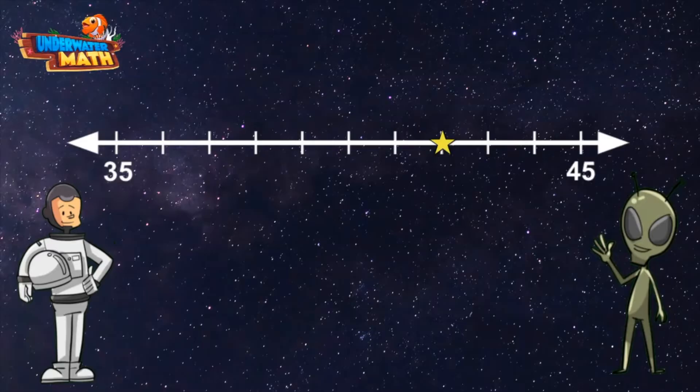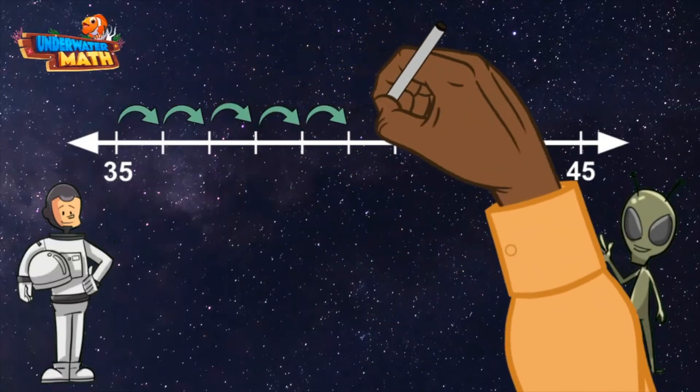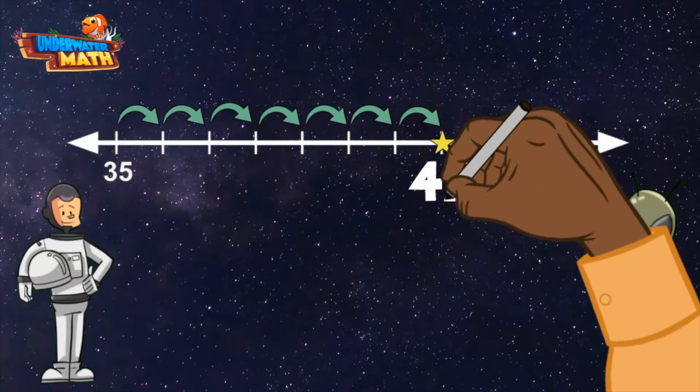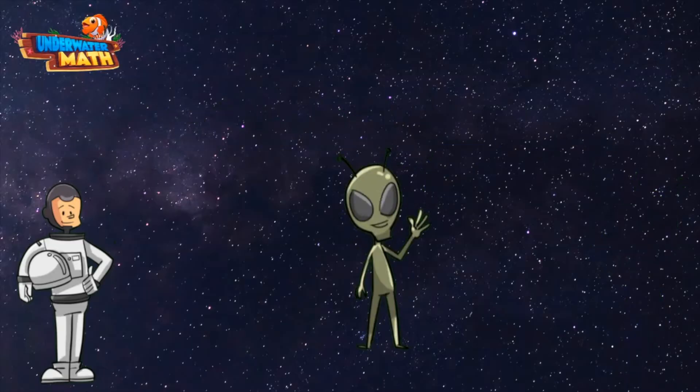Between 35 and 45, let's start at 35 and count until we reach the star: 36, 37, 38, 39, 40, 41, 42. The star represents the number 42. Let's try another one. Lenny, give us a number line.